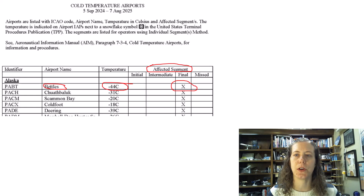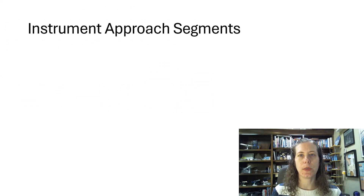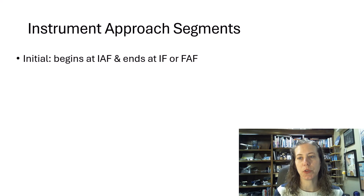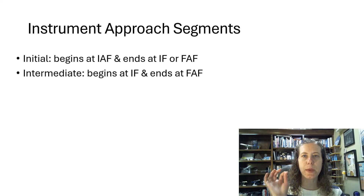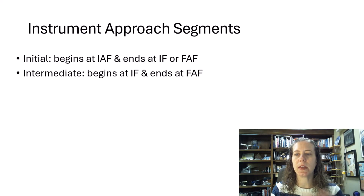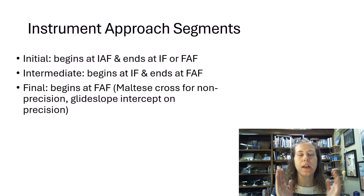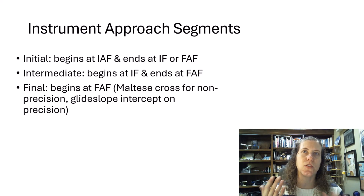Before we go further, let's quickly review the different segments of an approach. The initial approach segment starts at the initial approach fix and ends at the intermediate fix or the final approach fix. The intermediate segment begins at the intermediate fix and ends at the final approach fix — not all approaches have an intermediate fix, but those that do, it covers that portion. The final approach segment, by definition, starts at the final approach fix, shown as a Maltese cross on a non-precision approach.